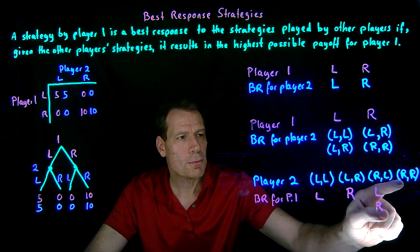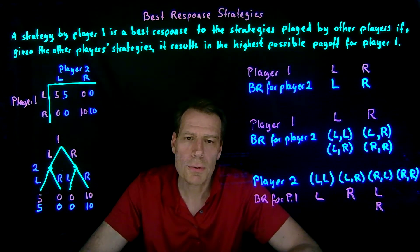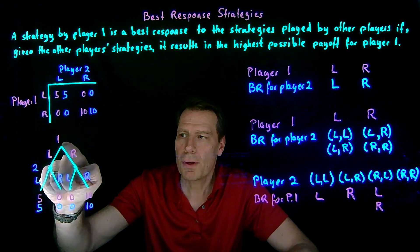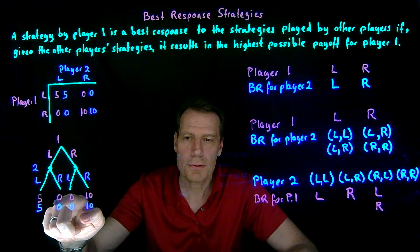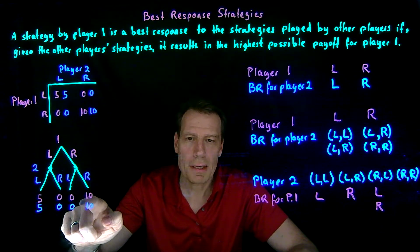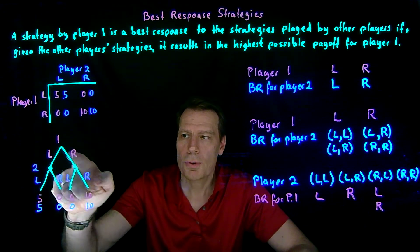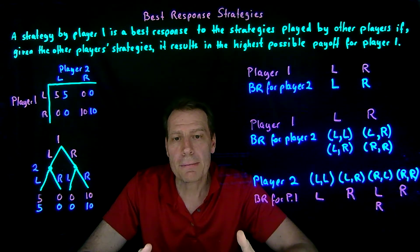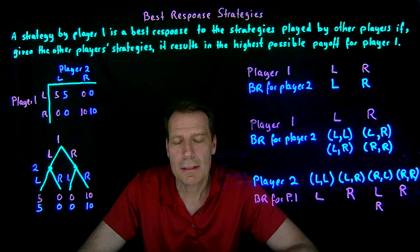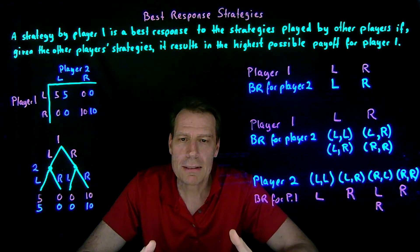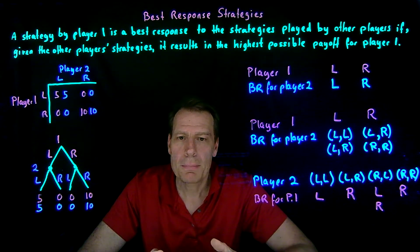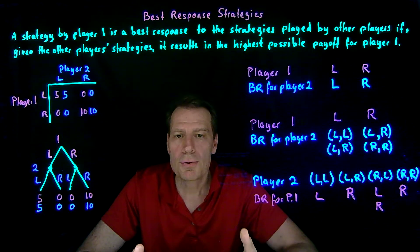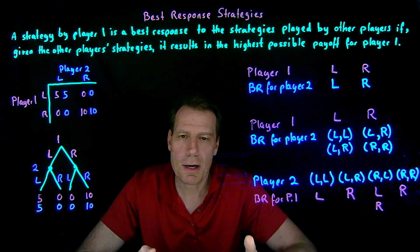Finally, what if player 2 plans to go right-right — always go right regardless of what node she ends up on? Then if player 1 goes left, she goes right and he gets 0. If he goes right, she goes right and he gets 10. Since 10 is better than 0, going right is the best response for player 1. So the important thing about best response strategies is that they are strategies people choose to maximize their payoff — doing the best they can given their circumstances, where the circumstances are defined by what other people are doing.